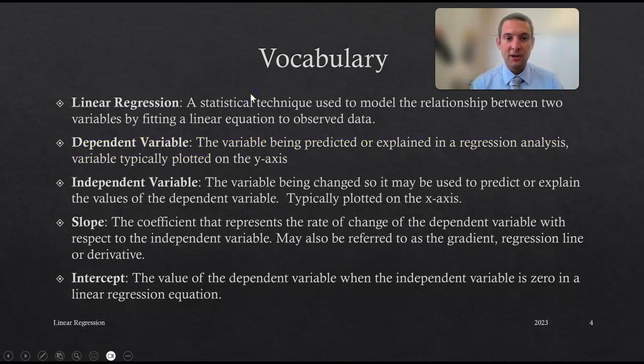We have our dependent variable, which is the variable being predicted or explained in a regression analysis, typically plotted on the y-axis. Our independent variable is the variable being changed, so it may be used to predict or explain the values of the dependent variable, typically plotted on the x-axis.